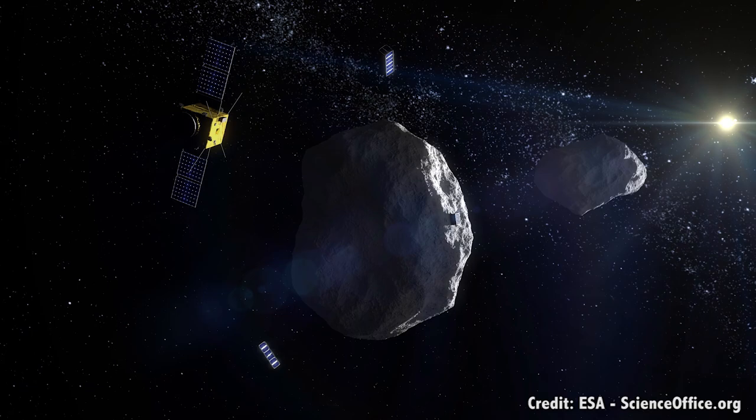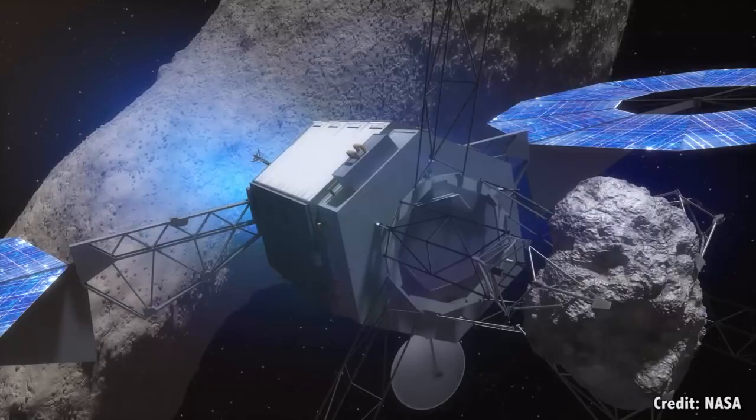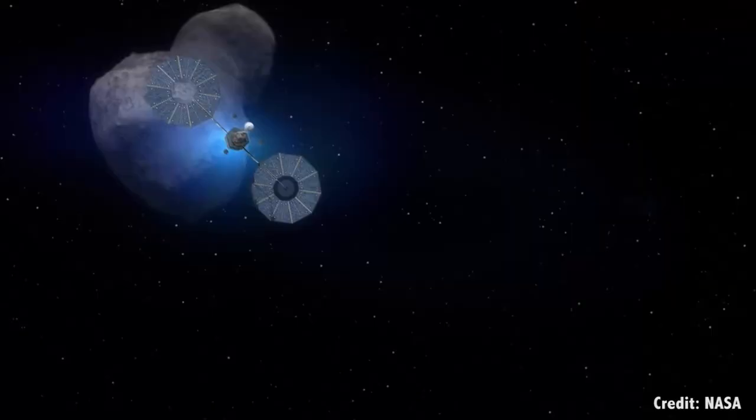Want to move an asteroid? Use the gravity of a less massive object, like a spaceship. Hold the spaceship close to the asteroid, and their gravity will pull them together. Fire your rocket's thrusters to keep the distance, and you slowly pull the asteroid in any direction you like.